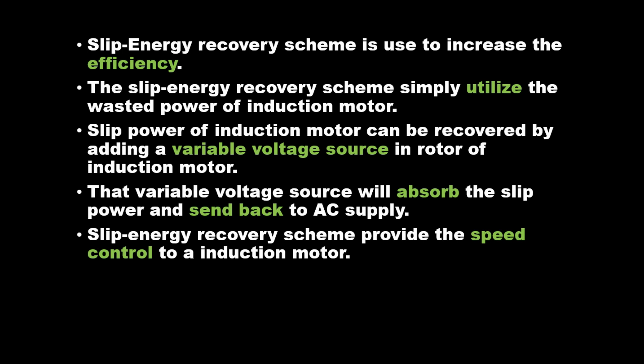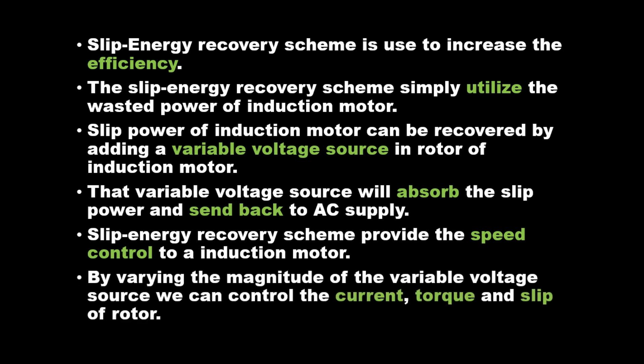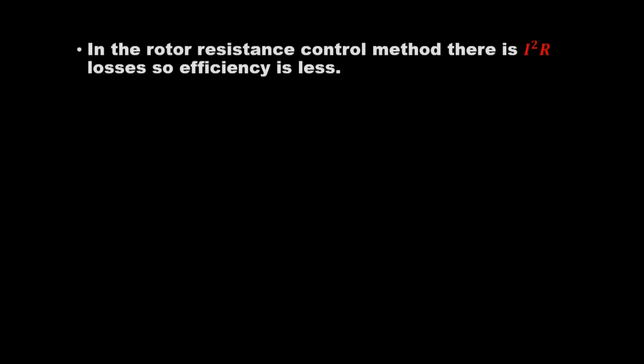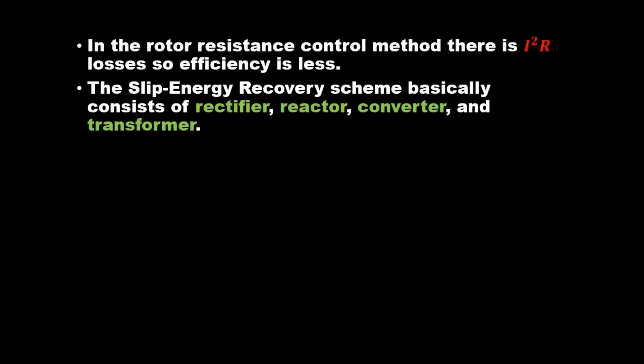By varying the magnitude of the variable voltage source, we can control the current, torque, and slip of the rotor. In the rotor resistance control method there are I²R losses, so efficiency is less. The slip energy recovery scheme avoids these losses by recovering slip energy instead.